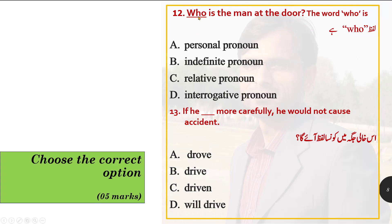Option number 12: 'who is the man at the door?' The word 'who' — what type of pronoun is it? Personal pronoun, indefinite pronoun, relative pronoun, or interrogative pronoun? Since 'who' is being used to ask a question here, it is an interrogative pronoun. We select option D: interrogative pronoun.